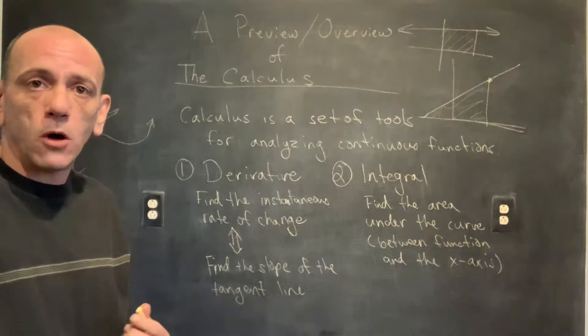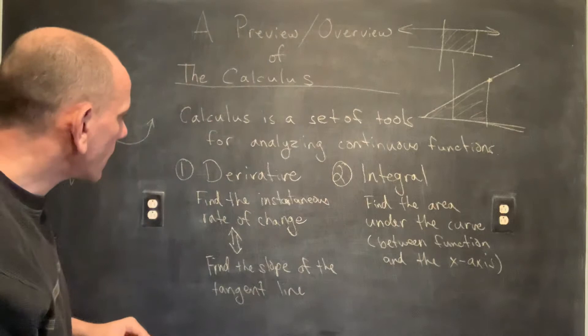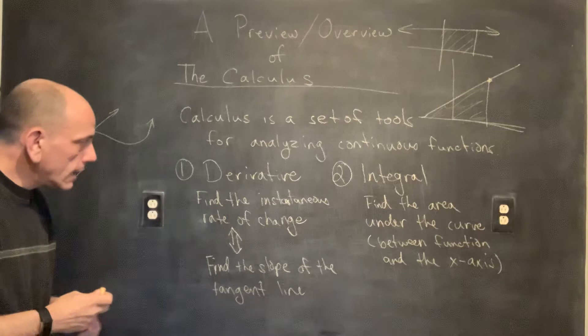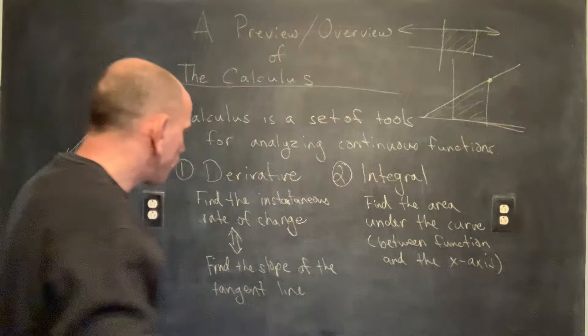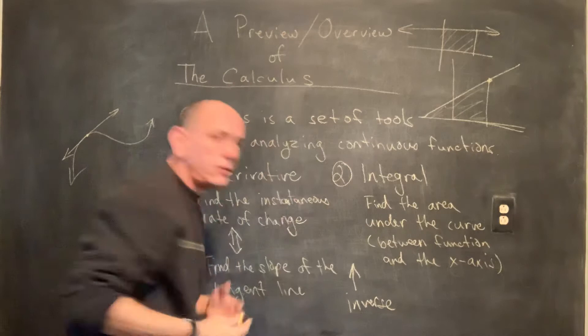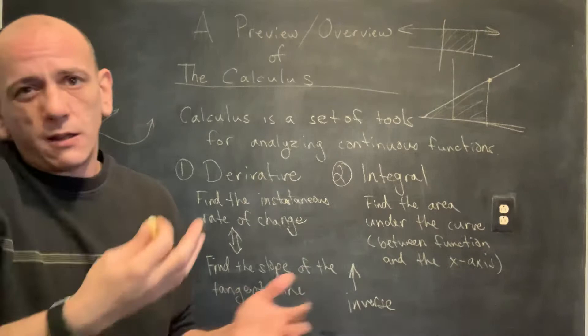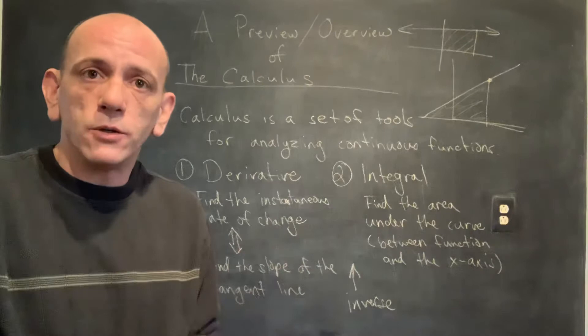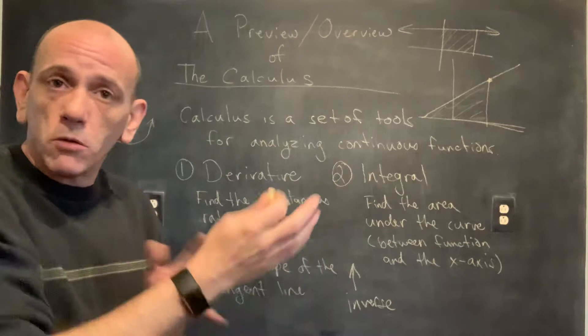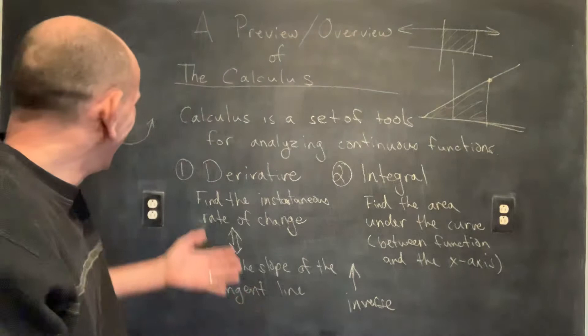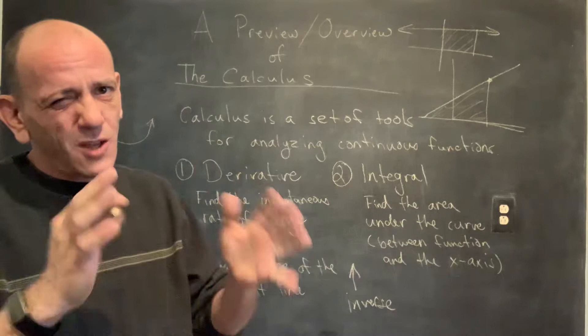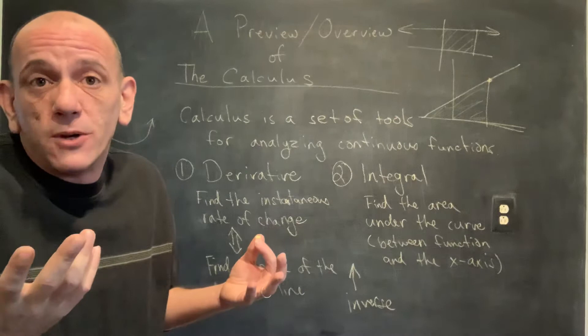Those are the two operations that come along with the calculus and the problems they're designed to solve. The weird thing is that the derivative and the integral are inverses of each other — they undo each other, in the formal sense, the way that multiplication undoes division or logs undo exponents. So the derivative and the integral undo each other, which is strange, since one is the slope of the tangent line and the other is the area underneath the curve.